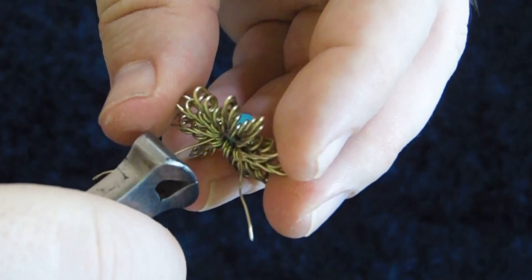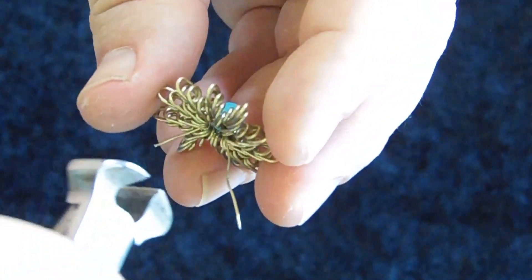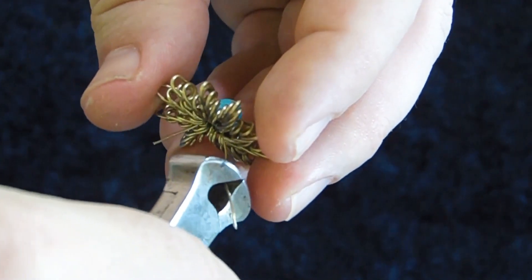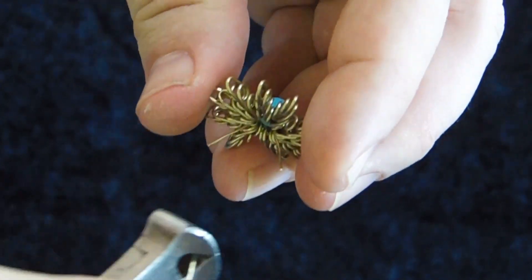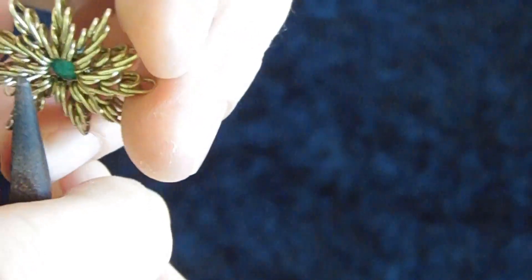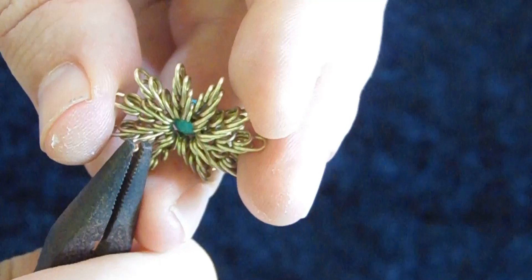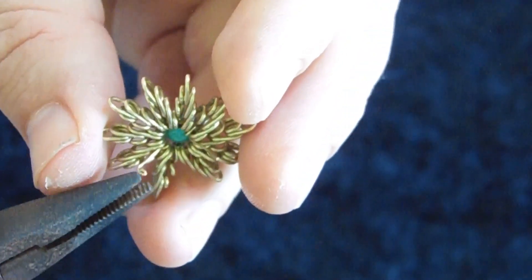Trim the excess wire and create small spirals at each end to prevent any poking. You can leave these spirals as they are, or if you prefer, you can hide them inside the coil. If you require further clarification on creating a spiral, please refer to the first tutorial in the series. You can find the link in the upper right corner of the screen.